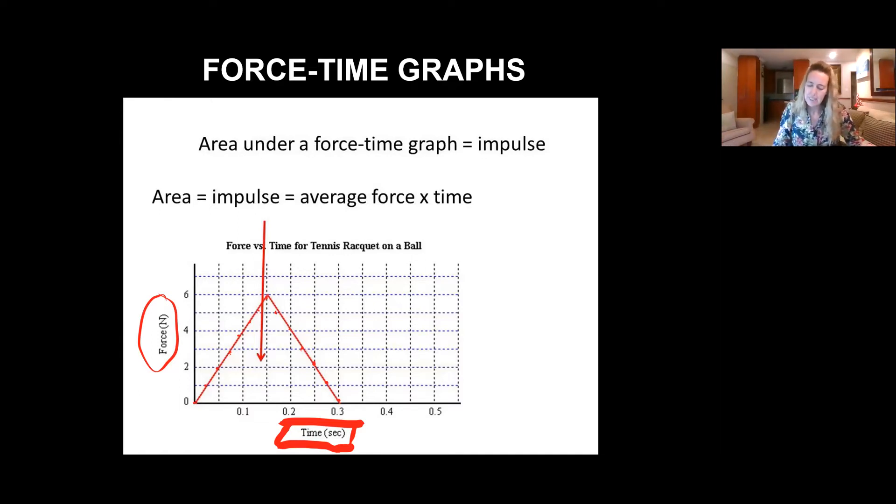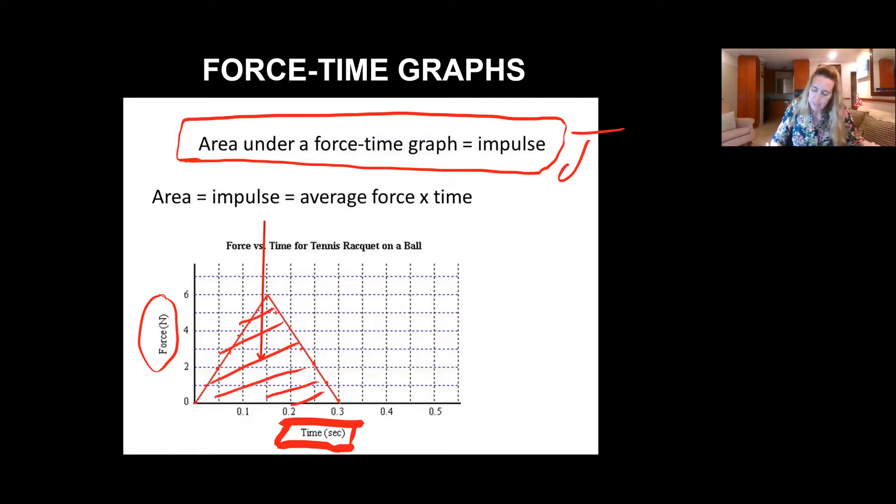So we say the area under a force time graph will always give us impulse. This area under this graph will always give us the impulse of a body, or the impulse of that net force. How does that work? Well we know that impulse is the product of net force and change in time. And that is exactly what we get if we work out the area under a curve. We are basically working out the product of the y and x values or the y and x variables on those axes.